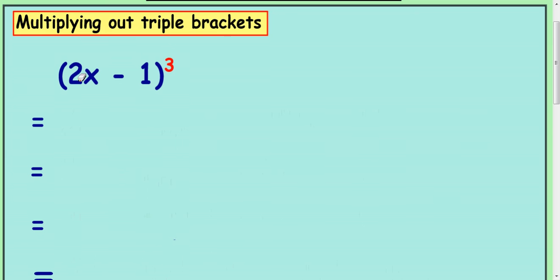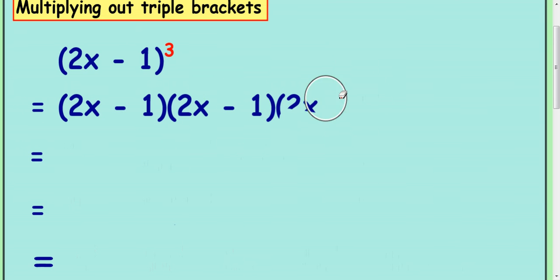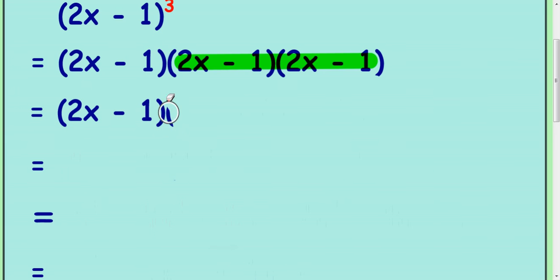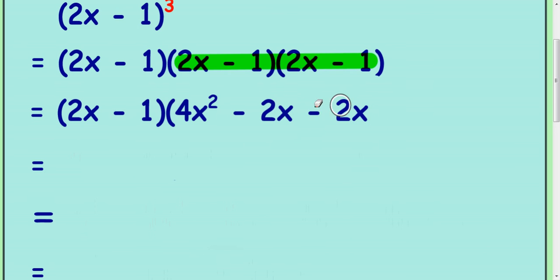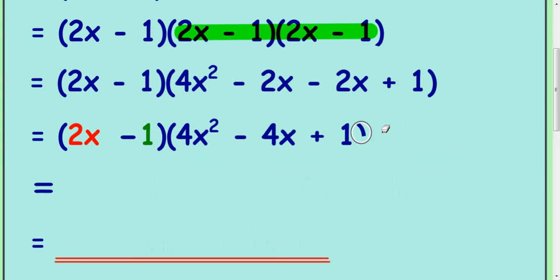Okay, I'm going to go through one more example with a coefficient in front of the x greater than 1. The same technique is used — it's just a bit trickier. So 2x take away 1 cubed: rewrite it as 2x take away 1 times 2x take away 1 times 2x take away 1. Focus on the last two brackets first, leaving the 2x minus 1 at the start. Multiply out the double bracket: 2x times 2x is 4x squared, 2x times negative 1 is negative 2x, negative 1 times 2x is negative 2x, and negative 1 times negative 1 is plus 1.